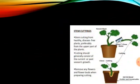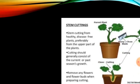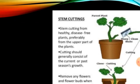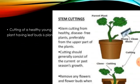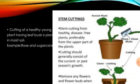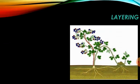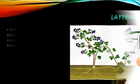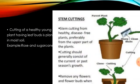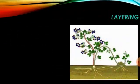The next process is stem cutting. In this process, a stem of a young, healthy growing plant is taken. The stem cutting has leaf buds and is put into moist soil. It then develops roots and leaves start growing. Like this, a new plant can be grown. Examples of such plants are sugarcane and rose.